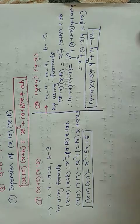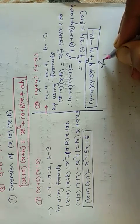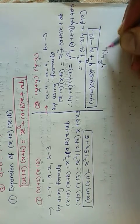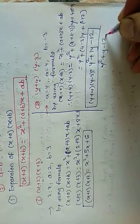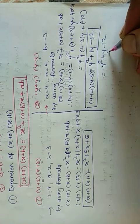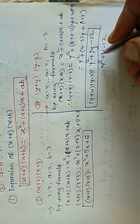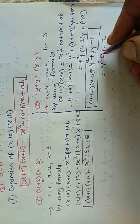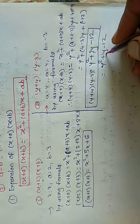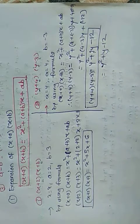If you write the answer as y² + y - 12, it is correct. If you write 1y, that is also correct. If you don't write 1, it is understood — there is an implied coefficient of 1.